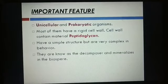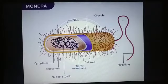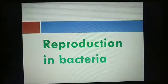Under Monera, the first and very important characteristic is that all organisms are prokaryotic and unicellular. That's why we also call Monera the kingdom of bacteria. We read the structure of bacteria. Today we are going to continue our next topic: reproduction in bacteria.